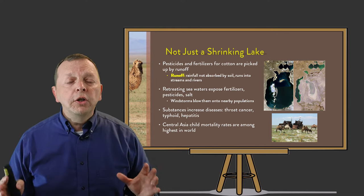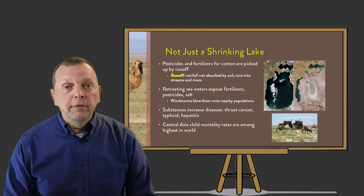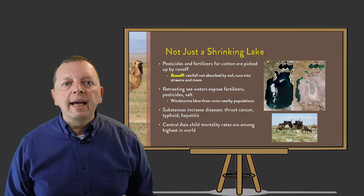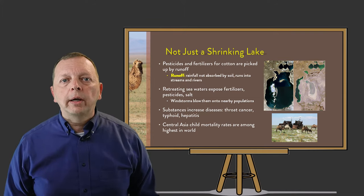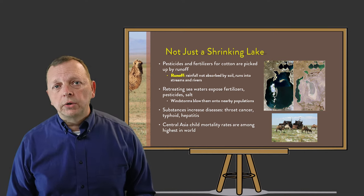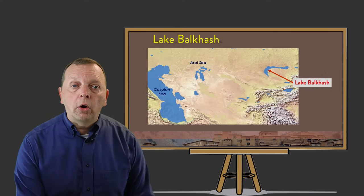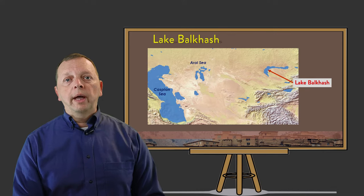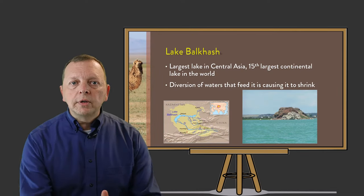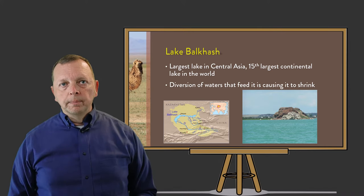Once in the air, these poisons were inhaled by the people of Central Asia, even children, which explains why the region has one of the highest infant mortality rates in the world. Unfortunately, it hasn't just been the Aral Sea that has had this problem. Lake Balkhash is the largest lake in Central Asia, and it is also shrinking because the rivers feeding it have been diverted for agriculture.